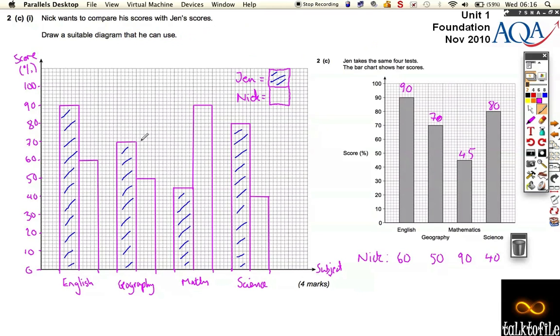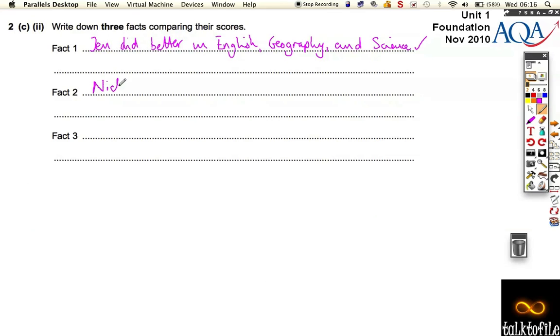We could spot, if we look at Maths, we've not mentioned Maths yet. Nick did much better in Maths than Jen. In fact she got 45 and he got 90. So we could write something like Nick got twice the score Jen did in Maths. So you know how I've said different point. Jen did better in those three subjects, Nick did better in Maths, but he did exactly twice, so I've been quite specific about what he did.